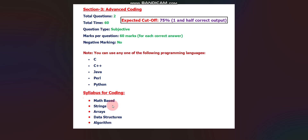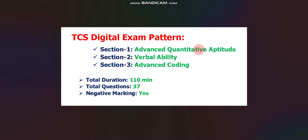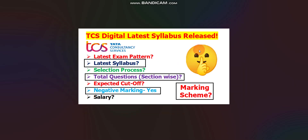An important note: you cannot switch programming languages between questions. For example, you cannot select C for question one and C++ for question two. You must select only one programming language for both questions. If you select Java, you need to solve both questions in Java; if you select Python, you need to solve both in Python.